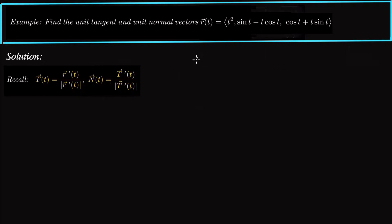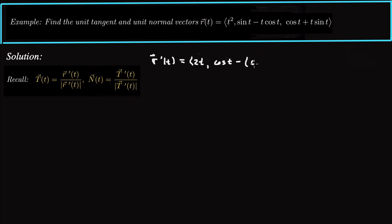So we have to take the derivative. R prime of t is going to equal 2t for the first component. Derivative of sine is cosine, and then product rule for t times cosine t: derivative of the first times the second gives cosine t, plus the first times derivative of the second gives negative t sine t.